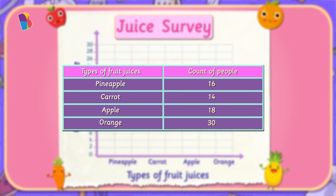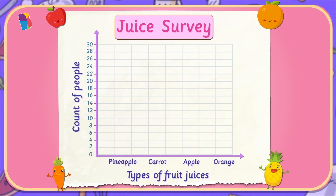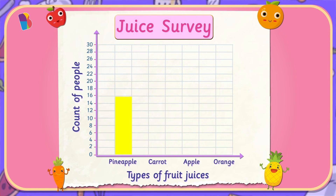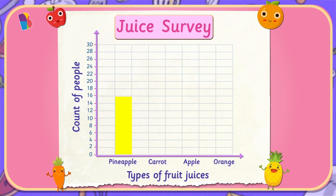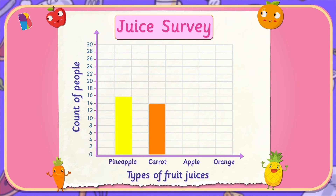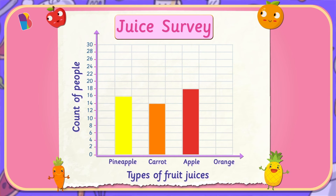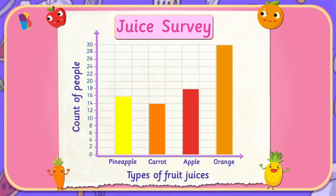The number of people who like pineapple juice is sixteen, and each unit on the vertical axis represents two people. So the length of the bar representing pineapple juice will be two, four, six, eight, ten, twelve, fourteen, sixteen — that is eight boxes of the graph. Next, we have carrot juice. The length of the bar representing carrot juice will be fourteen units, which is equal to seven boxes of the graph. Similarly, the length of the bar for apple juice will be eighteen units, equal to nine boxes. The bar for orange juice will be 30 units, equal to 15 boxes of the graph.